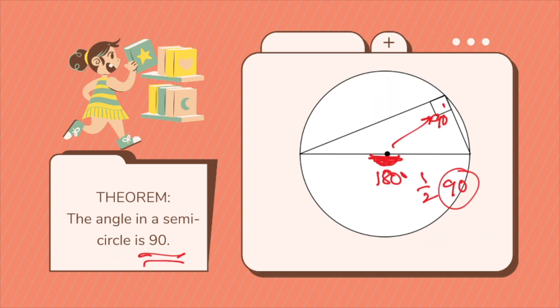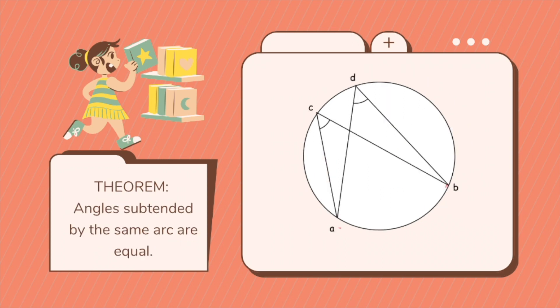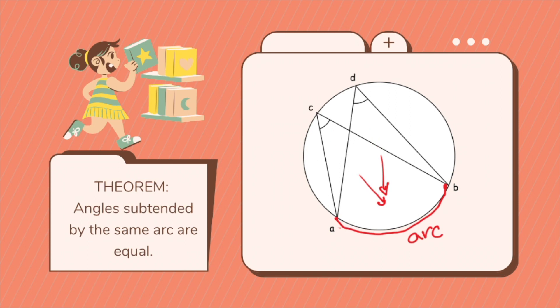The next theorem: angles subtended by the same arc are equal. Let's say point A to point B is your arc. Both of these angles are facing or subtended on the same arc. Hence, angle X and angle Y will be equal in measure based on this theorem.